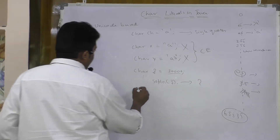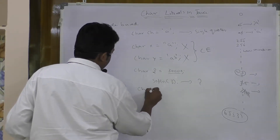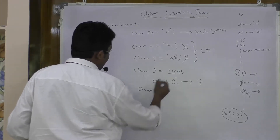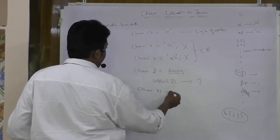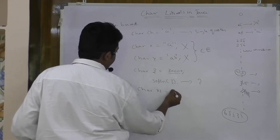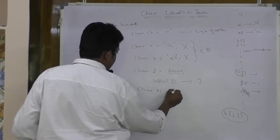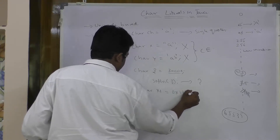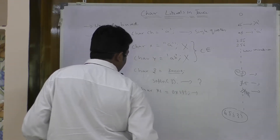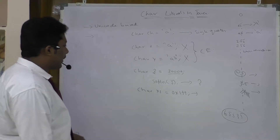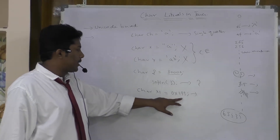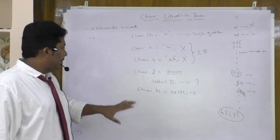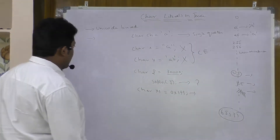You can give values to a character not only in decimal form but also in hexadecimal form. For example, you can write something like 0x1FF. This is a valid hexadecimal representation of some decimal value and is completely valid for a char variable.